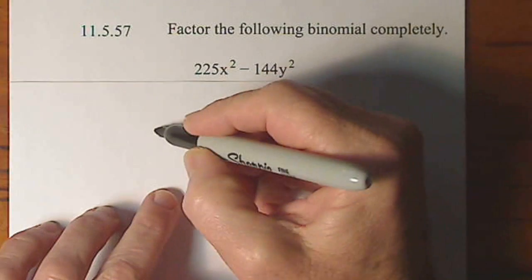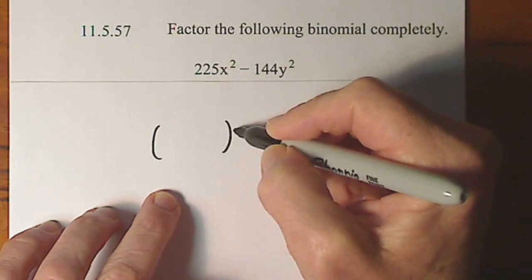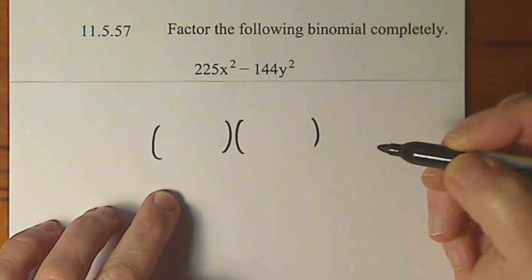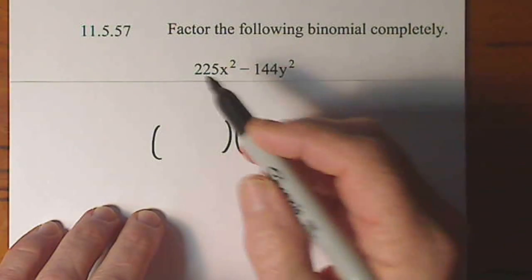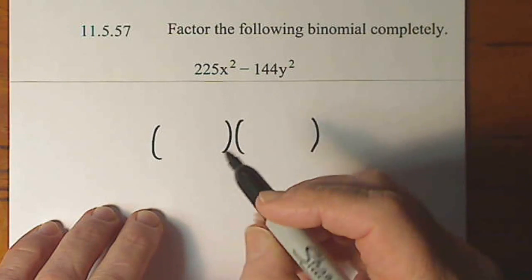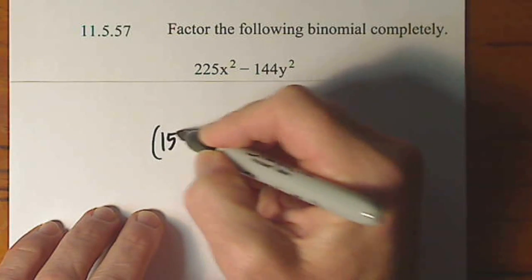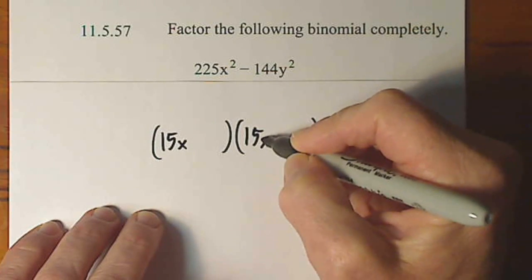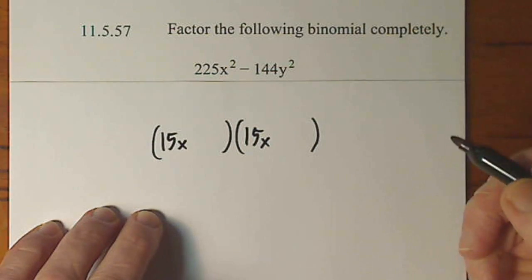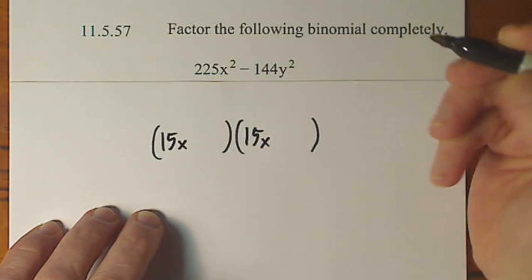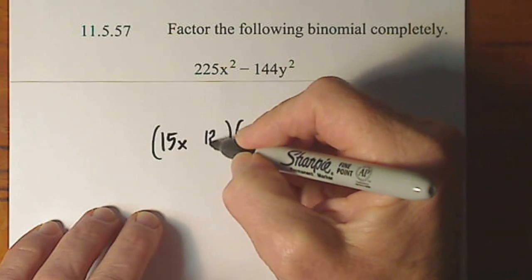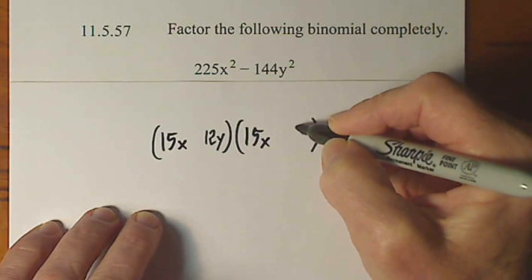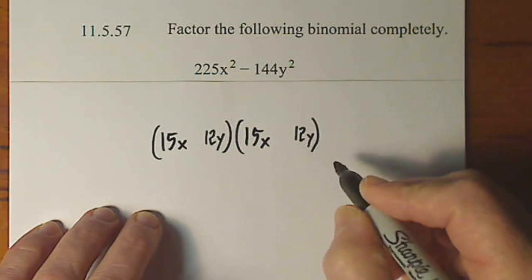So the thing with difference of squares is you just have to recognize it because there's not a lot to do in the way of calculations. You take the square root of 225x squared. That goes in the first position for each binomial. And you take the square root of 144y squared. That's 12y. That goes in the second position of each.